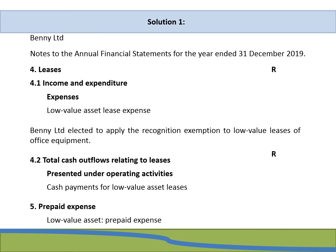With the notes laid out and calculations complete, all that remains is to transfer the amounts to the disclosure. The straight-line amount to 31 December 2018 of 1,705 Rand is disclosed as the low-value asset lease expense. The total actual payments of 1,800 Rand are disclosed under cash payments in total cash outflows. The difference of 95 Rand — between actual payments and the amount recognized in profit or loss — is disclosed as a prepaid expense.